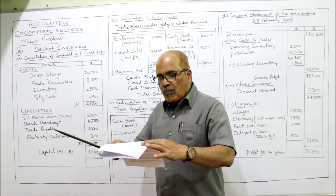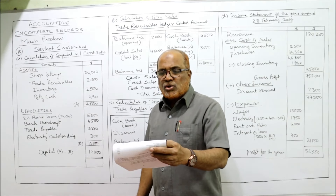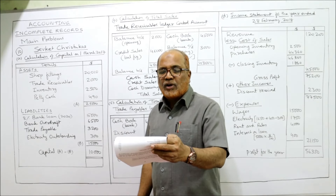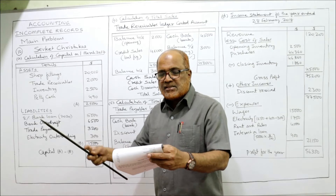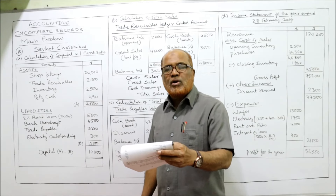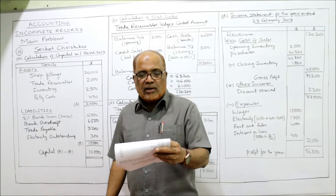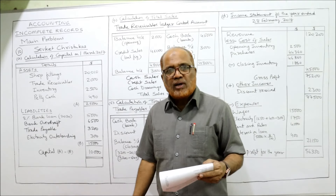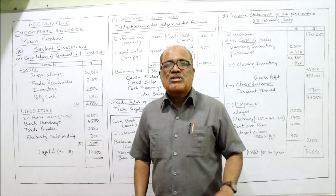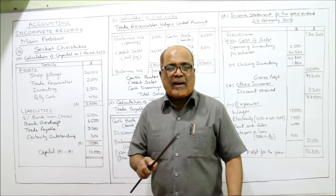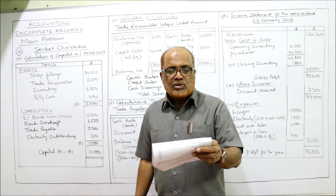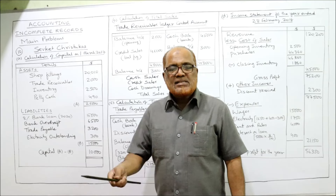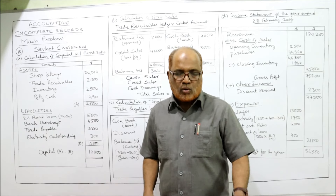During the year ending 28th February 2018, credit customers had paid $45,000 by check. Cash takings banked totalled $53,200 — this means goods were sold for cash and that cash was immediately deposited in the bank. Sevket had also taken $21,000 from the till for his own use, which is drawings.